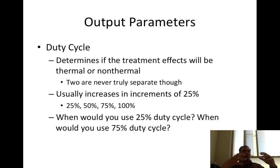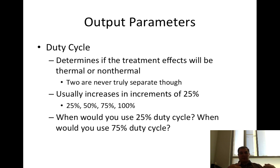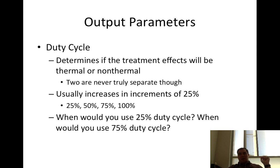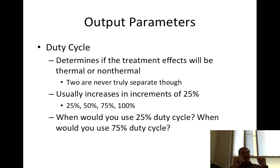Duty cycle determines whether the treatment effects will be thermal or non-thermal, though they're truly never completely separate. At 25% duty cycle you're still getting a slight thermal effect versus 100% thermal. For an acute ankle sprain today, maybe use a 10 or 25% duty cycle — whatever the lowest setting on that machine is. Three days later, as you're progressing through healing stages, you might bump up to 50, 75, or even 95%.